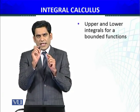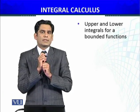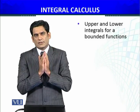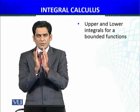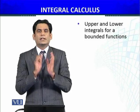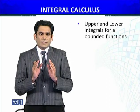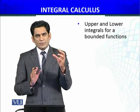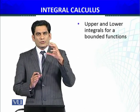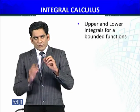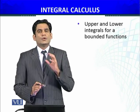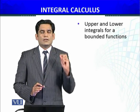Each sub-rectangle in the Riemann partition is arbitrary. If the function is bounded on the rectangle R, then for every sub-rectangle we take the maximum value of the function to form the Riemann upper sums, and the minimum value of the function over each sub-rectangle gives the corresponding Riemann lower sums.